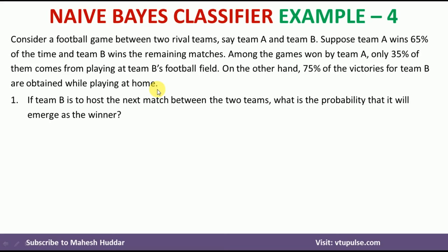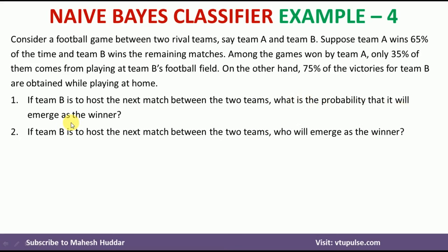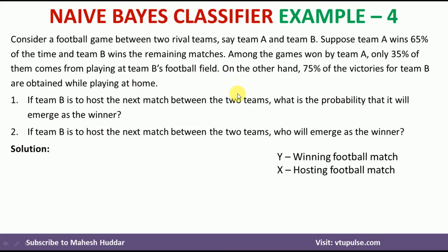We have been given two questions. The first one is: if team B is to host the next match between the two teams, what is the probability that it will emerge as the winner? The second question is: if team B is to host the next match, who will emerge as the winner? We have two events — winning a match and hosting a match — and two teams, team A and team B. We will use notation Y for winning a football match and X for hosting a football match.